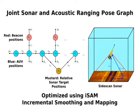We utilise ISAM — incremental smoothing and mapping — for non-linear optimisation and smoothing of the entire vehicle trajectory. In this way, we can improve both our current position estimate and all the position estimates up to that time. This is particularly important for survey completeness.